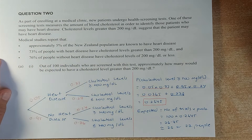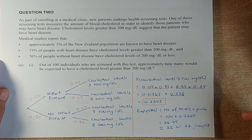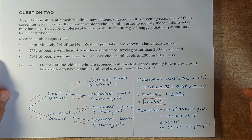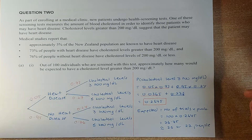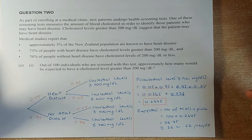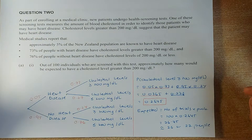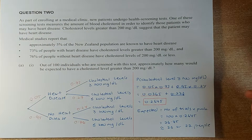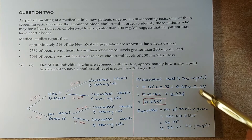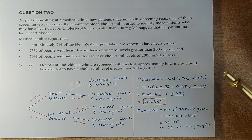So we will start the first question. In probability concept there are three main ways to calculate probability. The first one is table, which we have seen in question 1. The second one is the probability tree and the third method is called the Venn diagram. We will look at the probability tree and Venn diagram in this question.